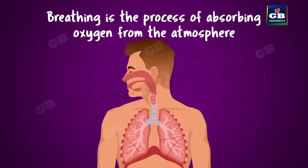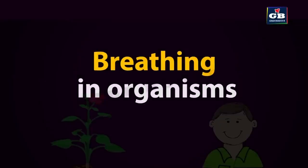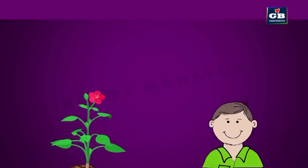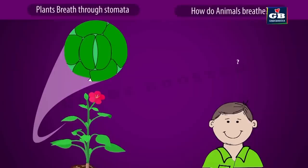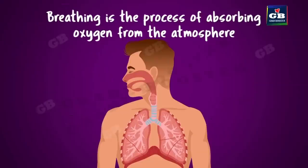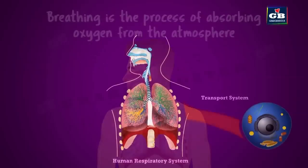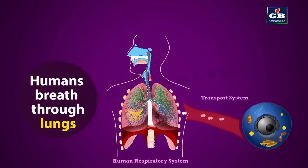How do aerobic organisms get a continuous supply of oxygen? It is done by breathing. Plants have small pores on their leaves called stomata for the exchange of gases. Animals need special respiratory organs for the exchange of gases. Breathing is an important part of respiration and helps to obtain oxygen from the surroundings. The human respiratory system is well designed to absorb oxygen from the atmosphere.